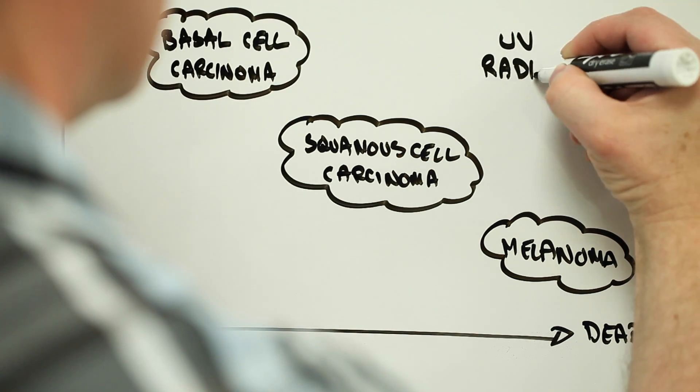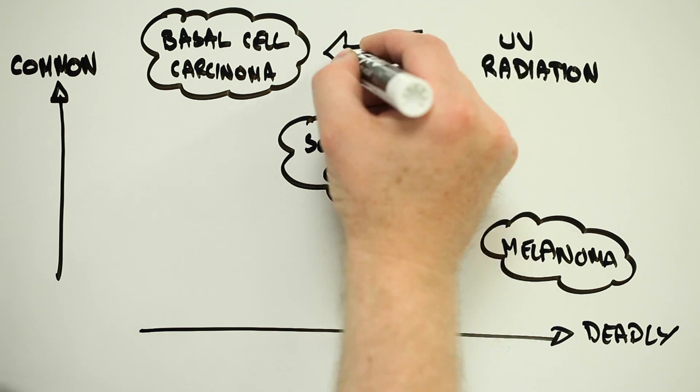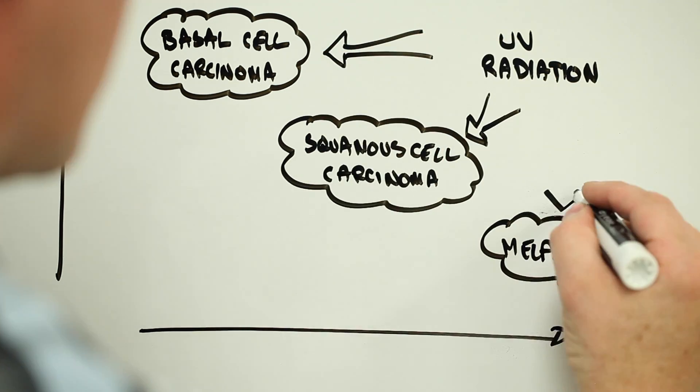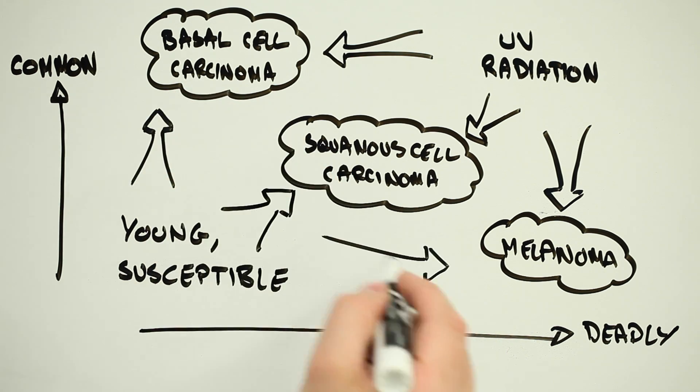Each of these cancers is associated with ultraviolet light exposure. The more UV you are exposed to, the bigger the risk of you developing skin cancer. The chances are greater still if you're young or you're particularly susceptible to skin damage from the sun. Because of this, there are national and international moves to restrict or ban the use of tanning beds.